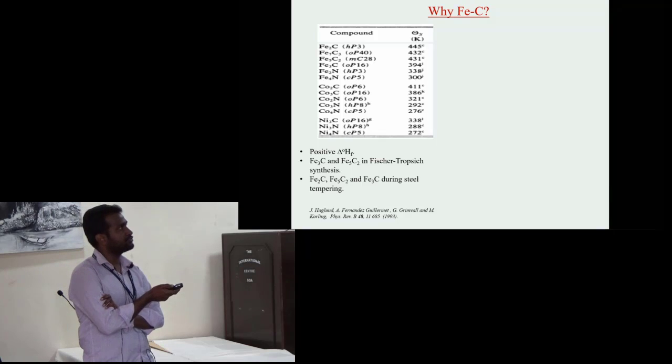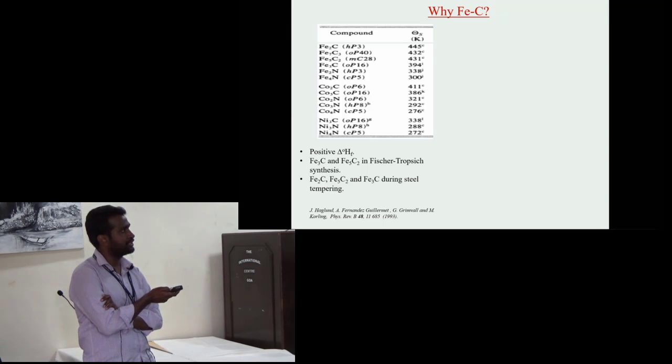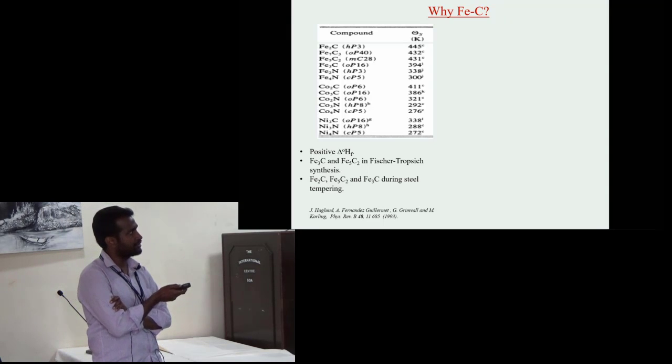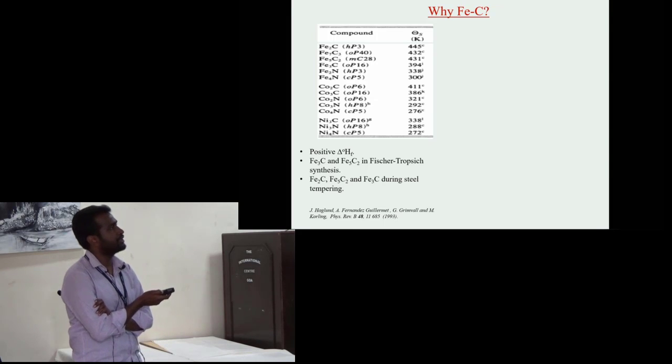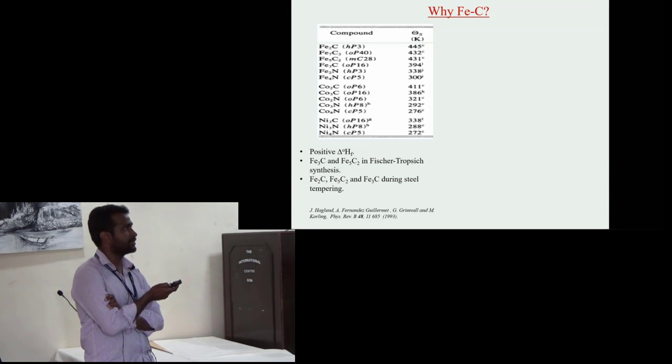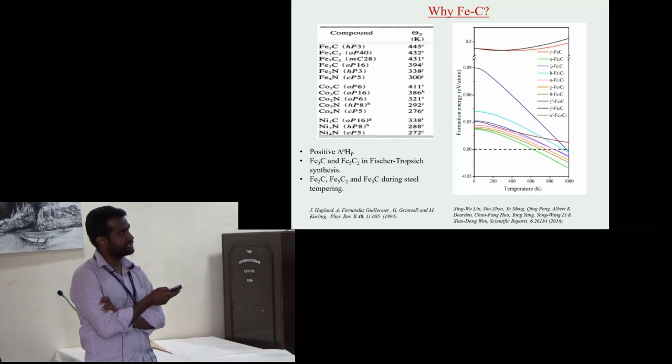Similar to the Fe-N system, this system shows very interesting properties but is thermally more stable due to higher Curie temperature compared with similar composition of nitride. In spite of very good thermal stability and other interesting properties, very few phases of this system have been explored experimentally and reports on other phases are lacking.